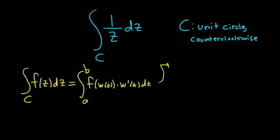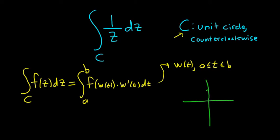Here w of t is a parametrization of your contour c, so t is between a and b and the graph of w gives you c. In this case we have the unit circle, which is just a circle centered at the origin of radius 1. Every point on the unit circle can be described by the function w of t equal to e to the it.